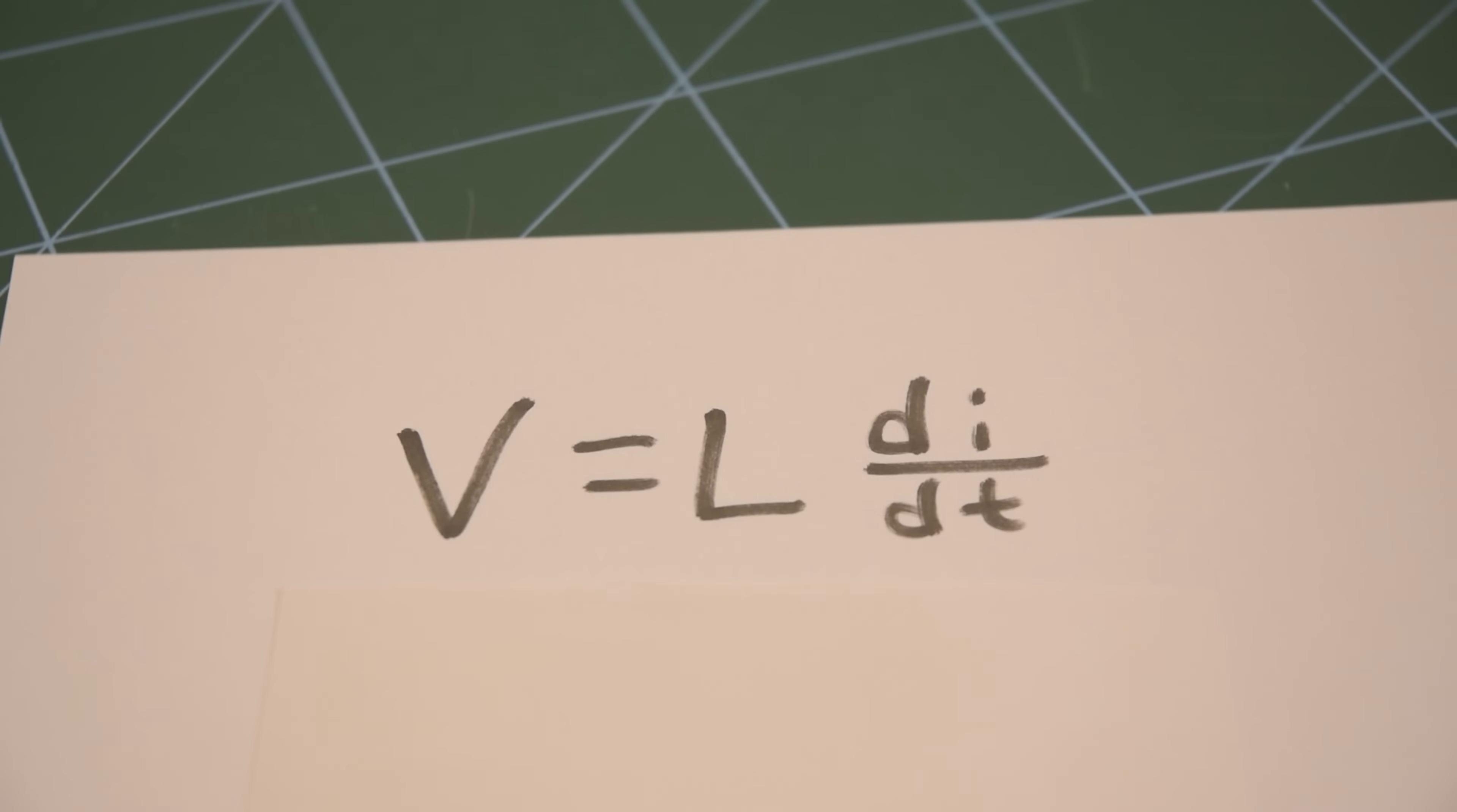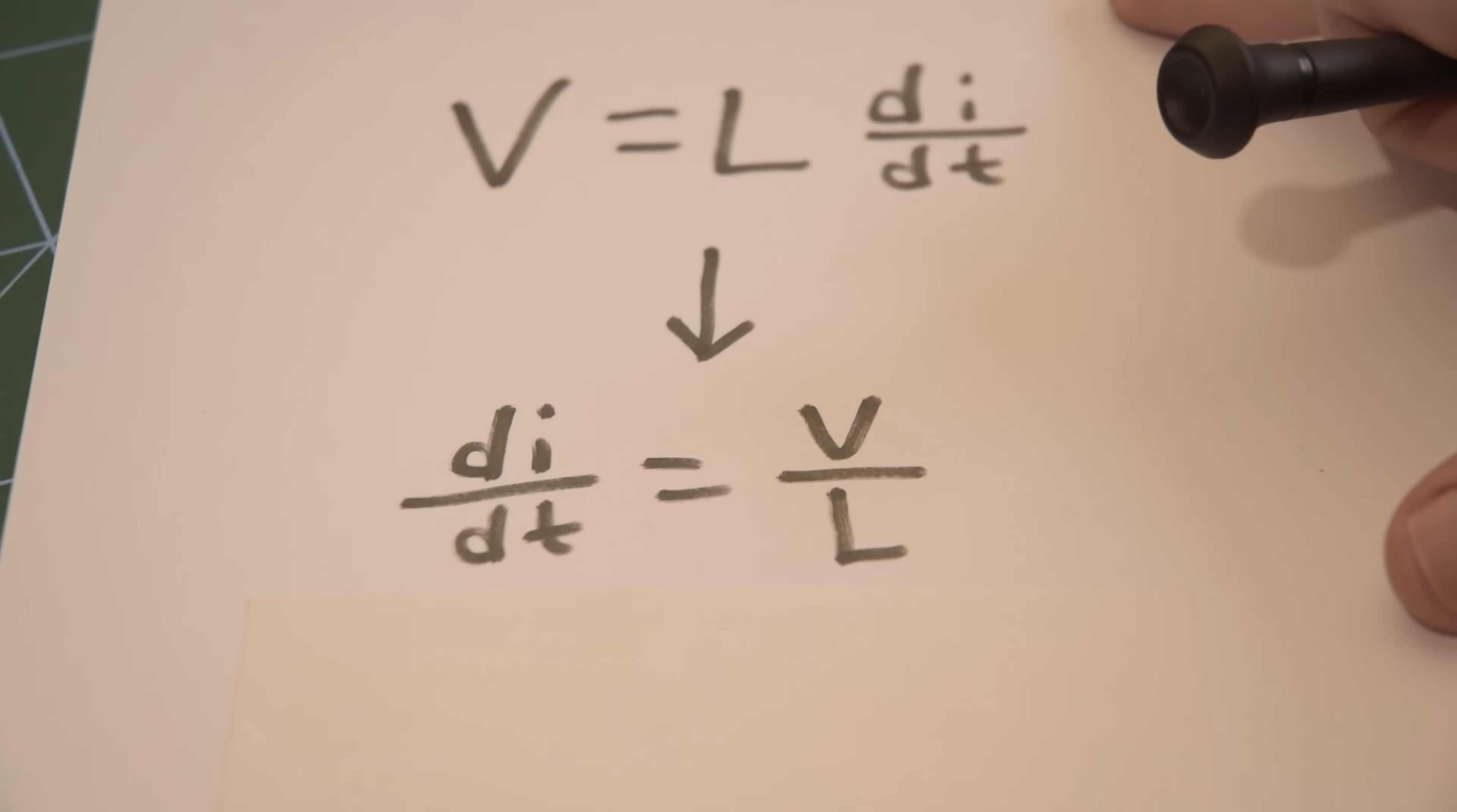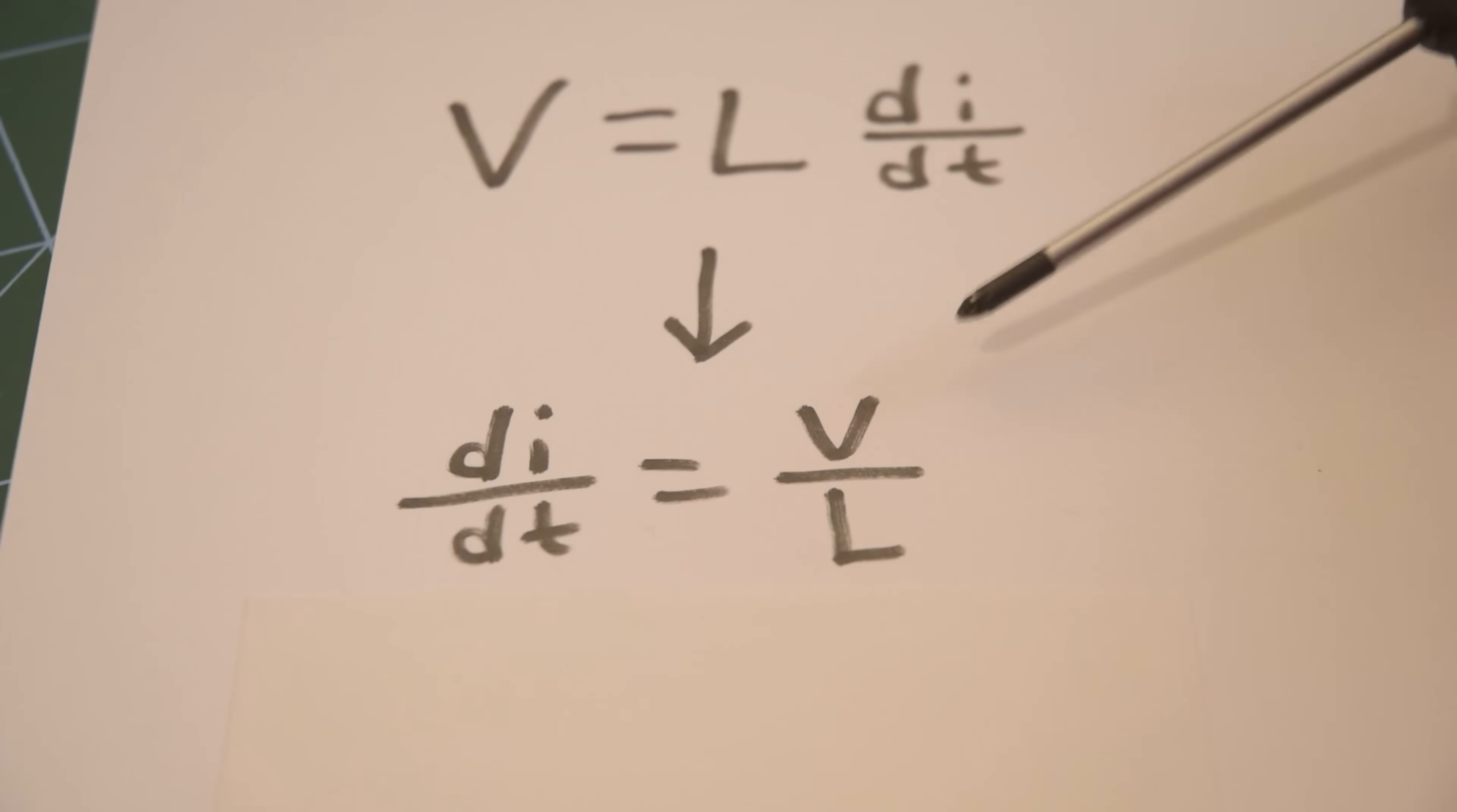So hopefully you guys can read this, I did it in my best handwriting. This is one of the most common equations used when dealing with inductors. And it tells us that the voltage across an inductor is equal to the inductance times the rate of change of the current going through it. Which isn't really that useful because we don't want a voltage, we want a current. So let's rearrange this to just get current on one side. Here this is now telling us that whatever voltage we put across the inductor, divide that by the inductance, and the current is going to go up at that rate.